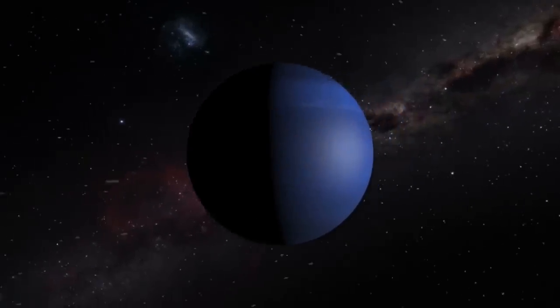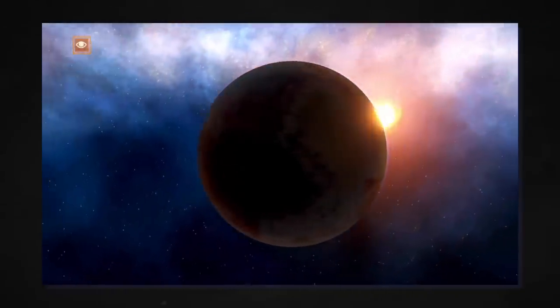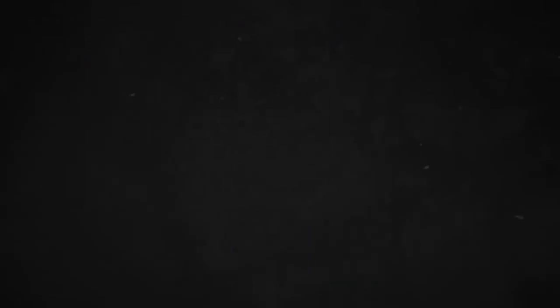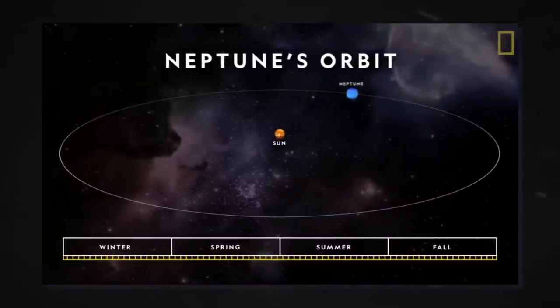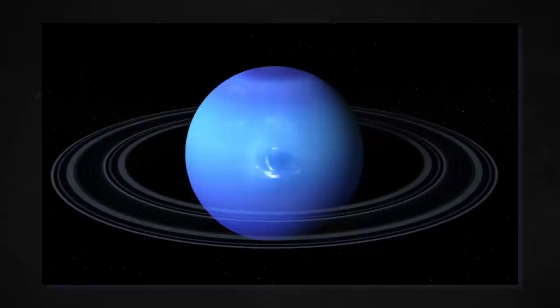Neptune is the outermost planet in our solar system. It used to be the second outermost before Pluto was removed from the list. Neptune is nearly 3 billion miles away from the Sun, making it relatively lonely. Neptune is quite similar in size to its next-door neighbor Uranus.